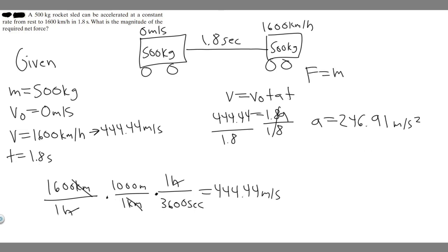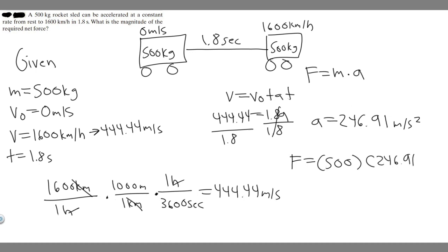Now we can solve for force using F = mass times acceleration. The mass is 500 kilograms and the acceleration is 246.91 meters per second squared. So force equals 500 times 246.91, which gives 123,455 newtons.